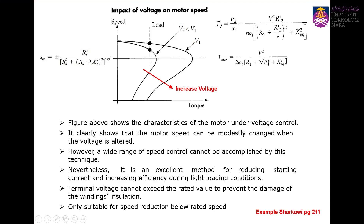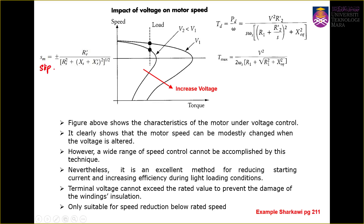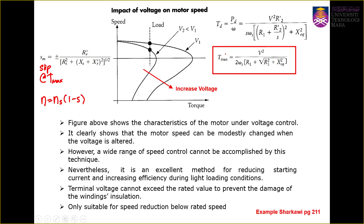Looking at the key equations: the slip at maximum torque — this is the slip at T_max. We can relate slip to speed by n = n_s(1 − s). If we look at this equation, the voltage has no effect on the slip at maximum torque — changing the voltage won't change the slip at maximum torque. However, looking at the T_max equation, the maximum torque is clearly affected by varying the stator voltage.